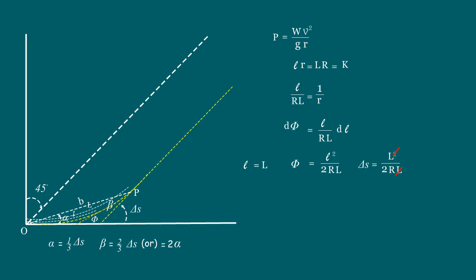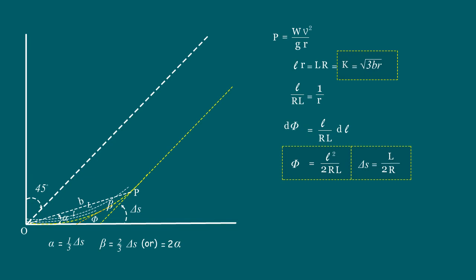Now the formula to get the value of K is the square root of 3BR. Remember, this constant K must be calculated for every curve individually, because it varies based on the length and the radius of the curve. Moreover, this constant is suitable only for the clothoid method of spiral curve, not suitable for other types, because the rate of change of radius varies for every type.